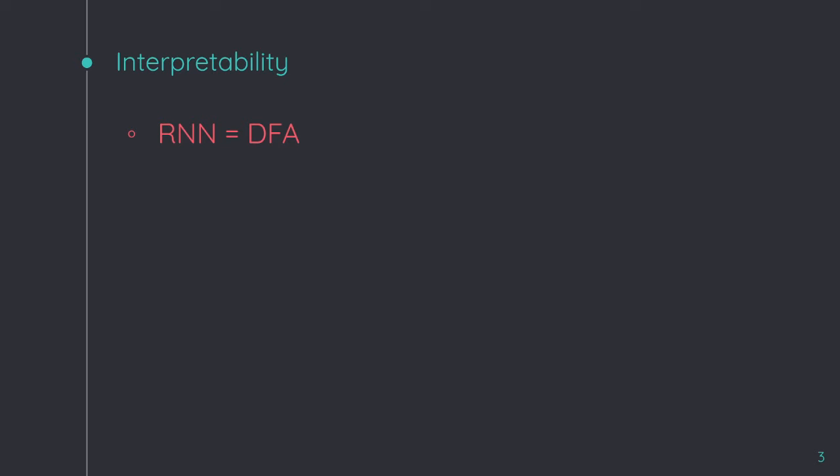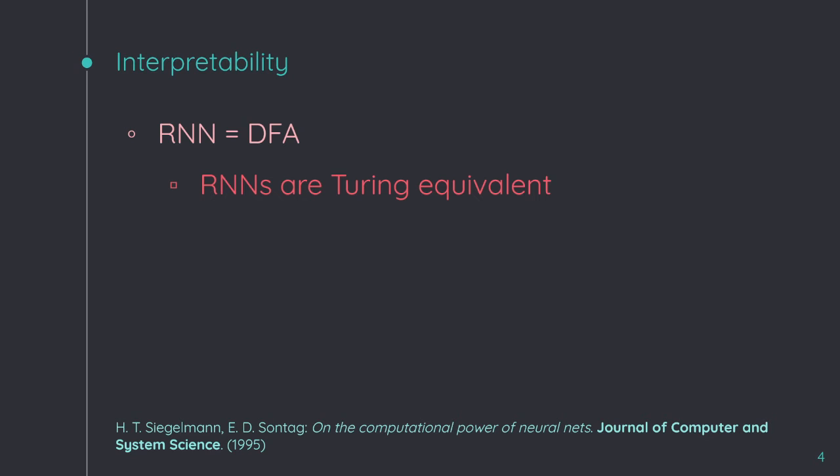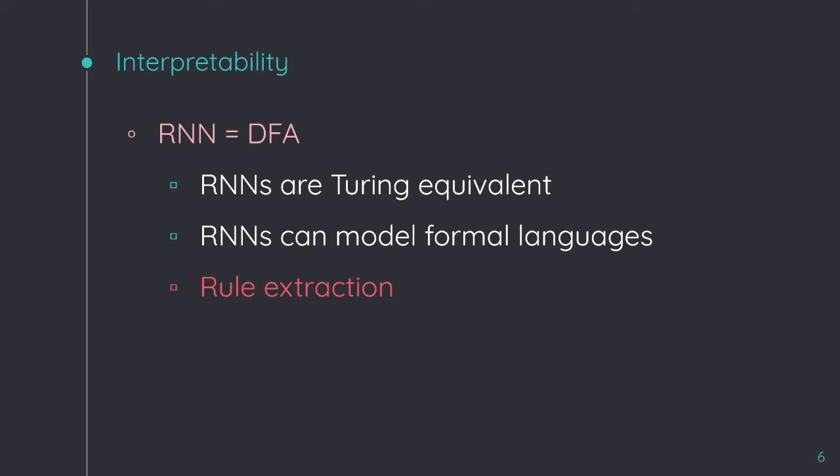If we train a network to learn a regular language, it is possible to match a recurrent neural network to a deterministic finite automaton, because these networks are Turing equivalent and they can model formal languages. To get this equivalence, we must go on with a procedure called rule extraction. This way, we can extract an automaton from the internal network behavior. However, this procedure has two main problems.